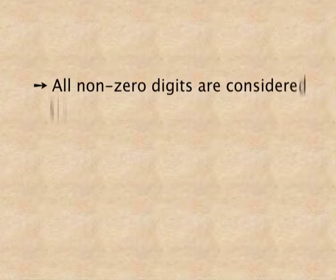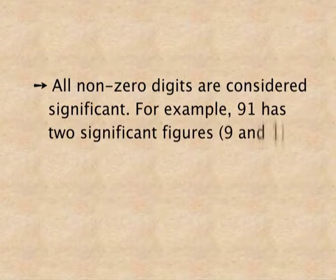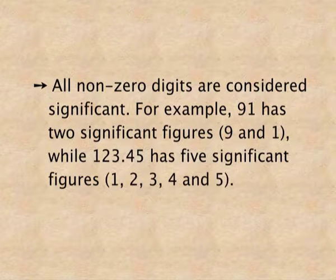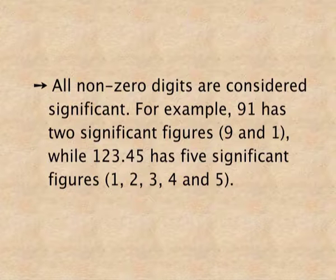First rule: all non-zero digits are significant. For example, 91 has two significant figures — 9 and 1 — both are non-zero digits. Another example: 123.45 has five significant figures — 1, 2, 3, 4, and 5.